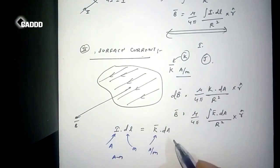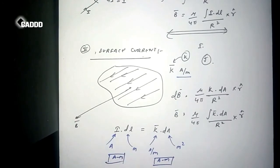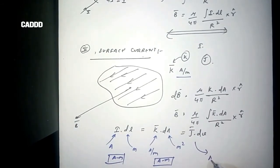And further we will see the volume current, which will be J dot dV, and that thing's unit will also be ampere meter. So let's discuss that also.